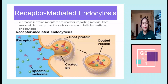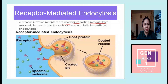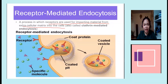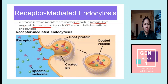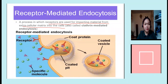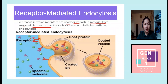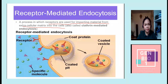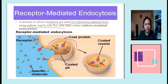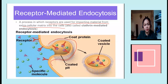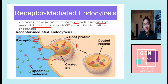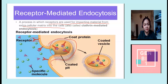Receptor-mediated endocytosis is a process in which receptors are used for importing materials from the extracellular matrix into the cell. Receptors on the outside of the cell membrane bind to a specific molecule. Once the receptor has the specific molecule attached, the membrane infoldsaround it. Once everything is enclosed — the specific molecule with the receptor — it becomes a vesicle, which is then transported to the organ that needs that specific molecule.